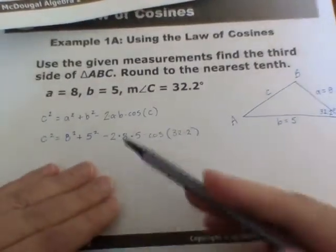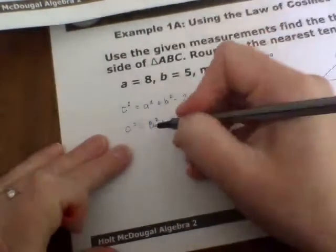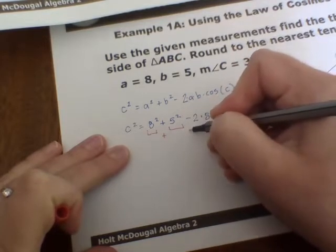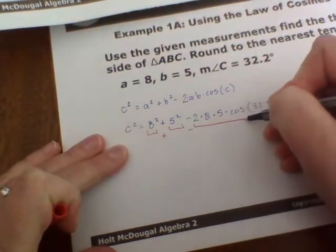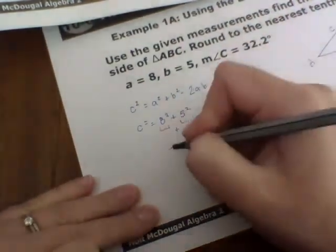All right, so thinking of how we're going to solve this, there are actually kind of three sections. One of them is 8 squared, and from that we'll add 5 squared, and then from that we'll subtract this entire piece, which is kind of a lot. So breaking it down into each of those pieces,